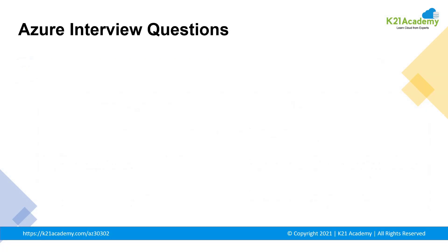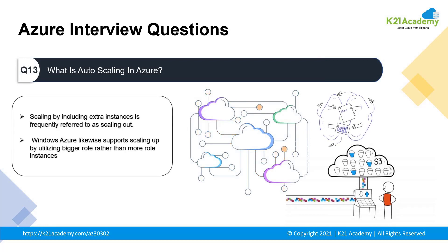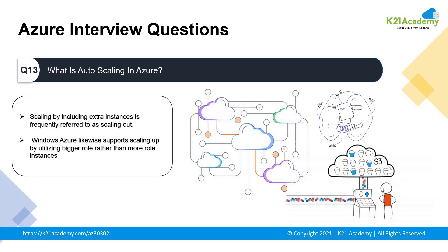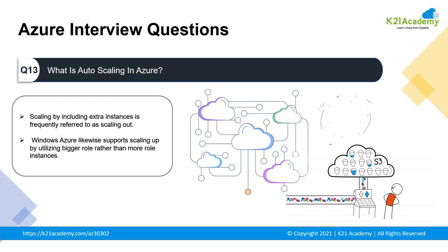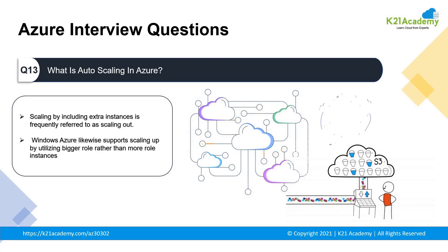Next up: what is autoscaling in Azure? The autoscaling feature enables your application to scale up or down automatically according to your defined criteria. Azure's autoscaling feature scales out instances whenever demand increases, so you can save money by switching off unnecessary instances automatically.